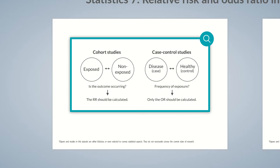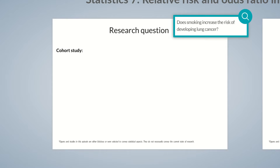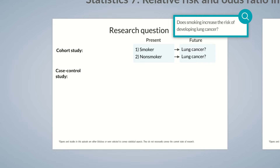Let's tackle this like a researcher and start with a research question: Does smoking increase the risk of lung cancer? To answer this question, we could perform a cohort study and compare a group of smokers with a group of non-smokers, ensuring that none of the study participants have lung cancer. We would then follow the participants for some time to determine whether they develop lung cancer. Alternatively, we could conduct a case-control study and select patients with lung cancer, termed cases, and recruit individuals without lung cancer, termed controls. The next step is determining the number of study participants that were smokers.